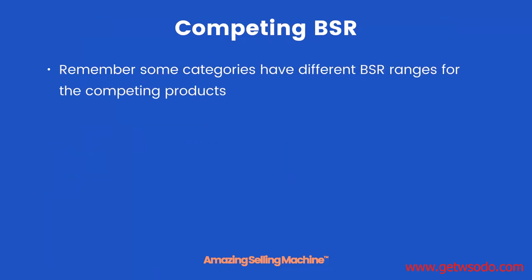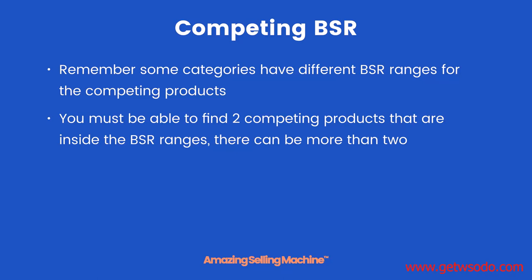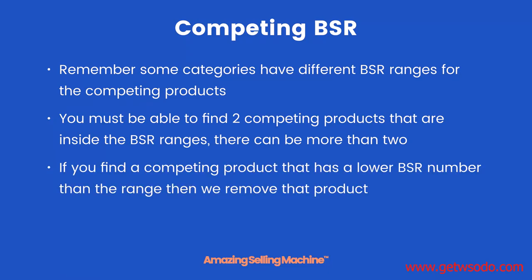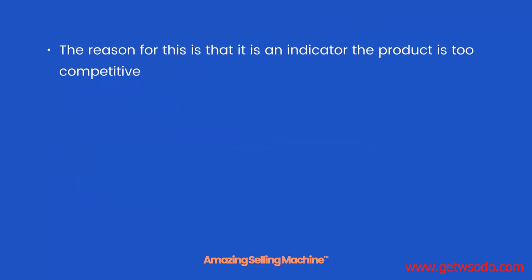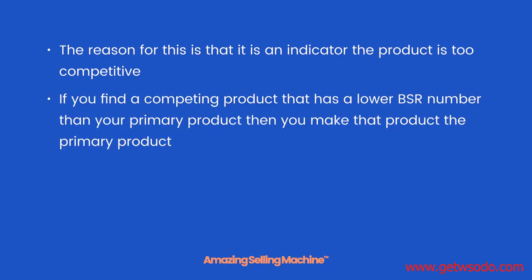Remember, some categories have different BSR ranges for competing products, so make sure you've got the BSR range download next to your computer. You must be able to find two competing products inside the BSR ranges. If you find a competing product that has a lower BSR number than the range — in other words it's more competitive — then we remove that product, as it is an indicator the product is too competitive.